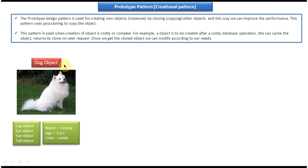Now a new requirement comes in: I have to create a dog object but the color should be brown, and all other properties are the same. What we would usually do is again use the new keyword and construct the leg object, ear object, eye object, tail object, set name, age, color, everything — and construct the dog object again. This is a complex operation.